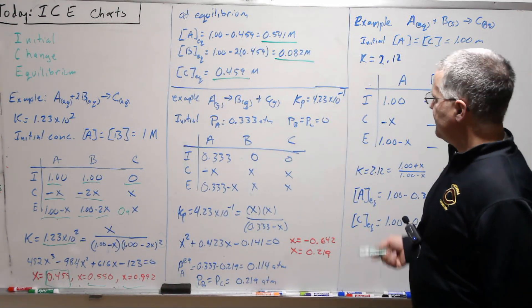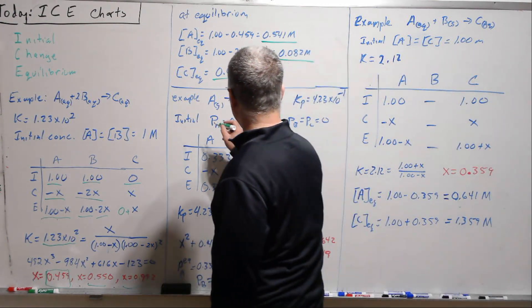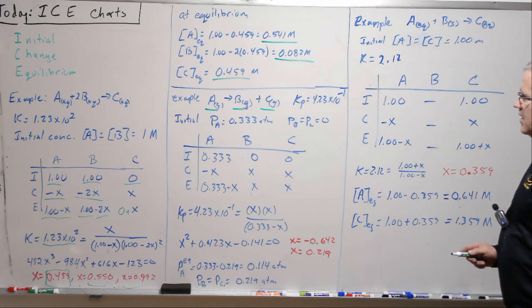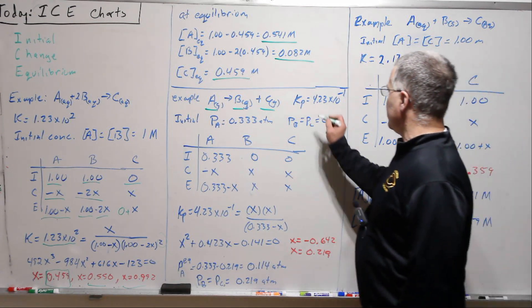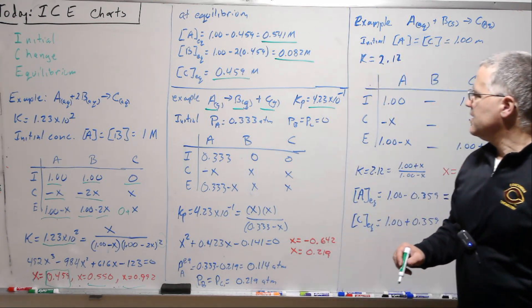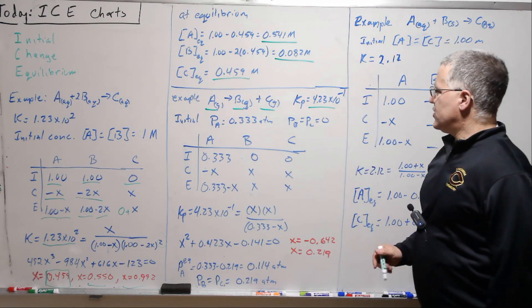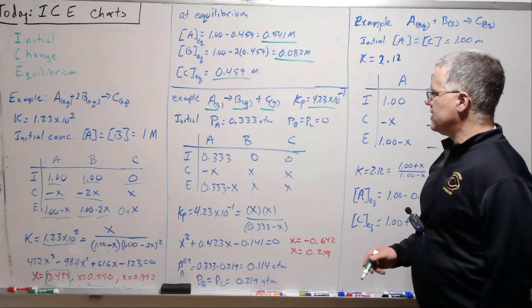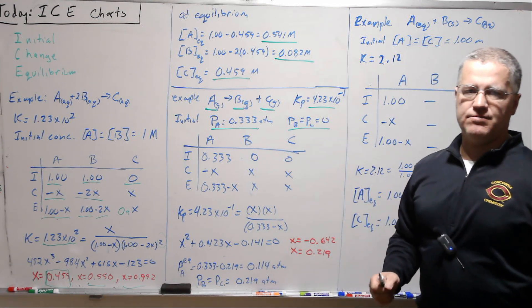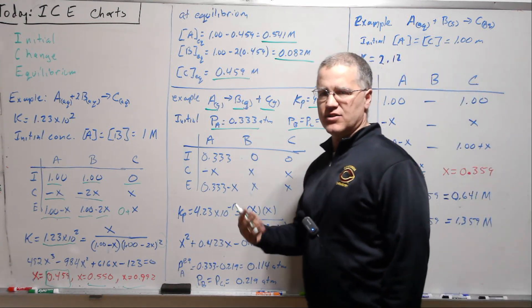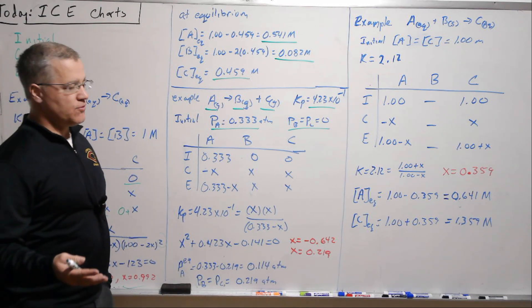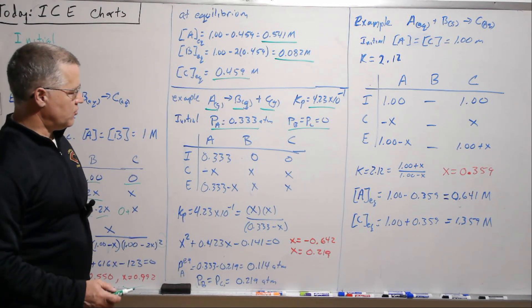All right, we'll go on with another example. Here we've got A goes to B and C. This is a gas phase, so we've got a Kp here, and we're told it's 4.2 times 10 to the minus 1, or 0.42. We're going to have initial concentration of A, and then no B or C around. So again, this is typical. We have reactant, no product. That's often an initial condition, although we certainly won't need to do that, and our last example will be a case like that.